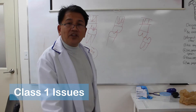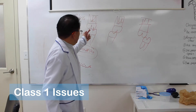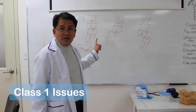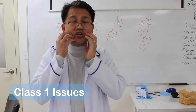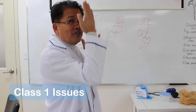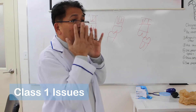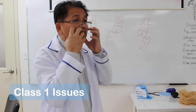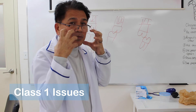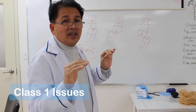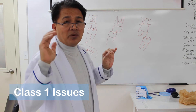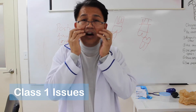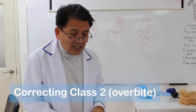In a Class 1 relationship, the cusp of the first upper molar sits in the groove of the lower first molar, meaning the jaw bones are lined up very well. If the jaw bones are aligned well but you have a contracted maxilla, after completing Phase 1 — which covers airway, posture, and tongue correction — you may also need an expansion of the maxilla or mandible.